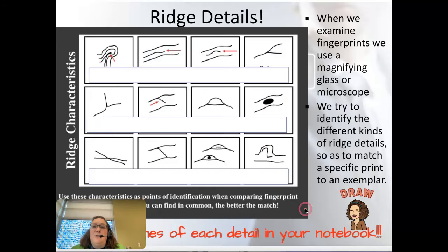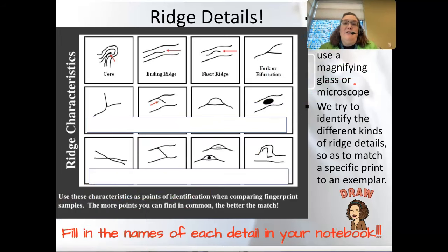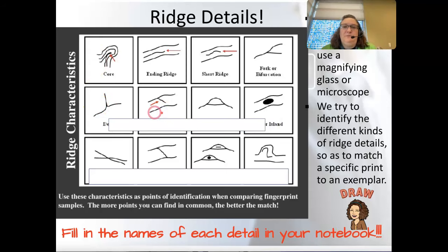Now we're going to look at ridge details. When we examine fingerprints under a magnifying glass or microscope, we're looking for very small details to match. Not only identifying the general type — like a loop — but being able to say it has a specific core that matches exactly with the location of the core on someone else's fingerprints. That's how fingerprints are used as identity evidence.